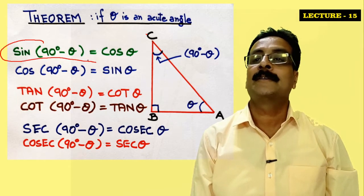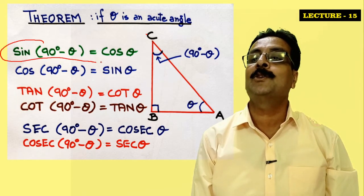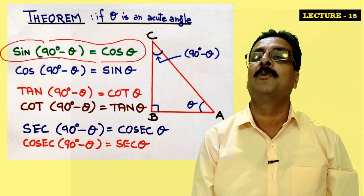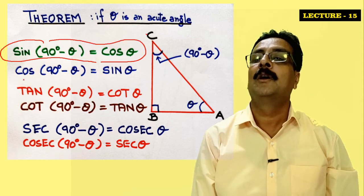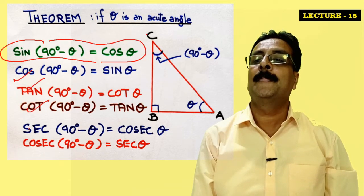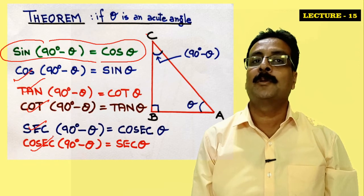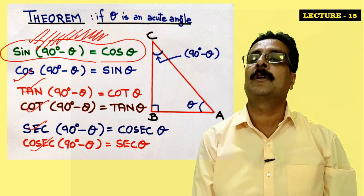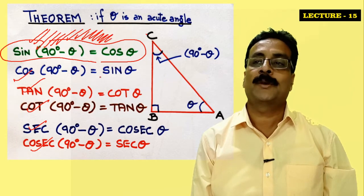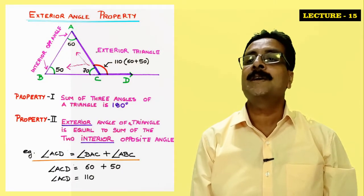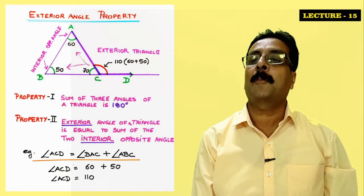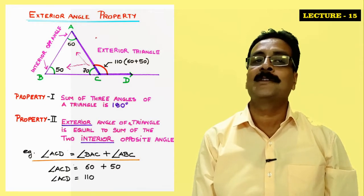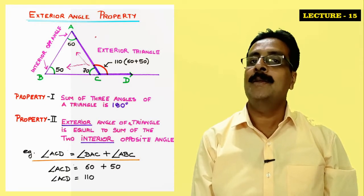We also need to remember the theorem for acute angles: sine(90° − θ) is equal to cosθ. This is the trigonometric ratio we will be using most often. There are many trigonometric ratios, but this is the one we'll use most in the sine rule. Please remember this.